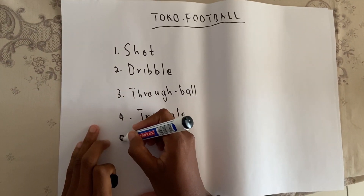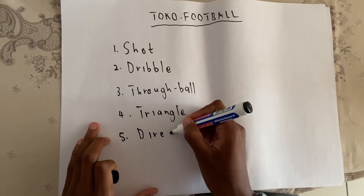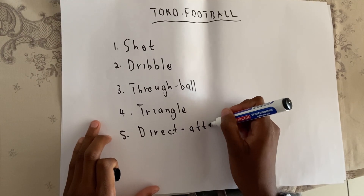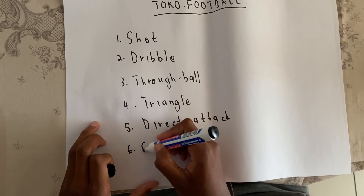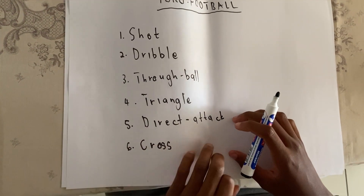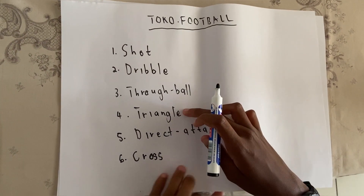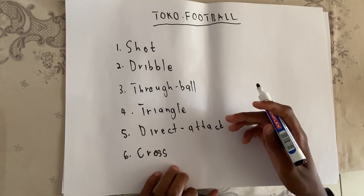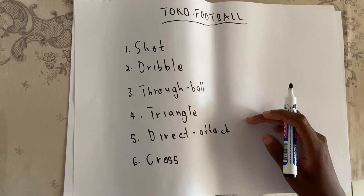At number five, a direct attack, and lastly at number six, it is a cross. In today's video our main focus will be at number four and number six, because these two have different types of triangles and crosses respectively. Let's jump right into it.